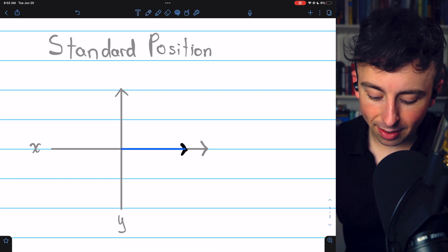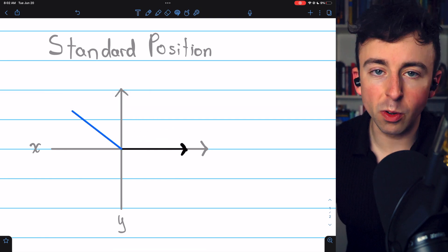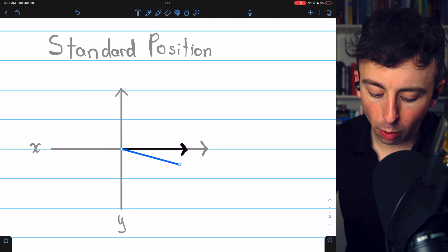And then, just like I said before, the terminal side will either rotate counterclockwise to create what's considered a positive angle, or it may rotate clockwise to create what is considered a negative angle.